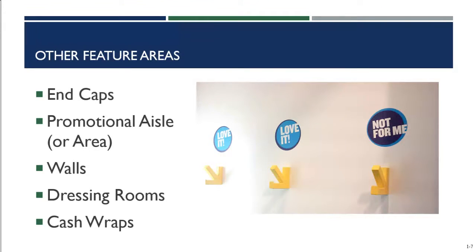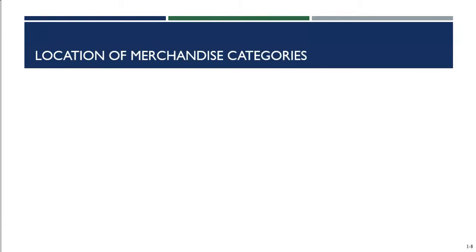That covers our general discussion on the three design elements retailers must consider when setting up their retail establishment. Next, we're going to talk about space management. Space is a very scarce resource in a retail establishment, and it's up to the store manager to determine how to best use the space available. Beyond applying the overall design, layout, and features, managers also have to decide where the merchandise goes — specifically, where to put each type of merchandise.